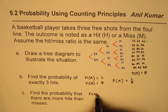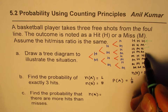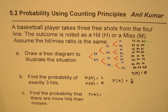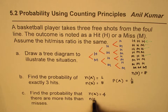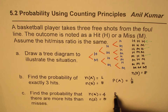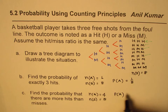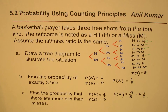Next, find the probability that there are more hits than misses. Let's count: HHH, HHM, HMH, MHH — that is four cases where hits outnumber misses. The total outcomes are still eight. So favorable outcomes over total possible outcomes gives us 4 out of 8, which is one half. The probability that there are more hits than misses is 1/2.